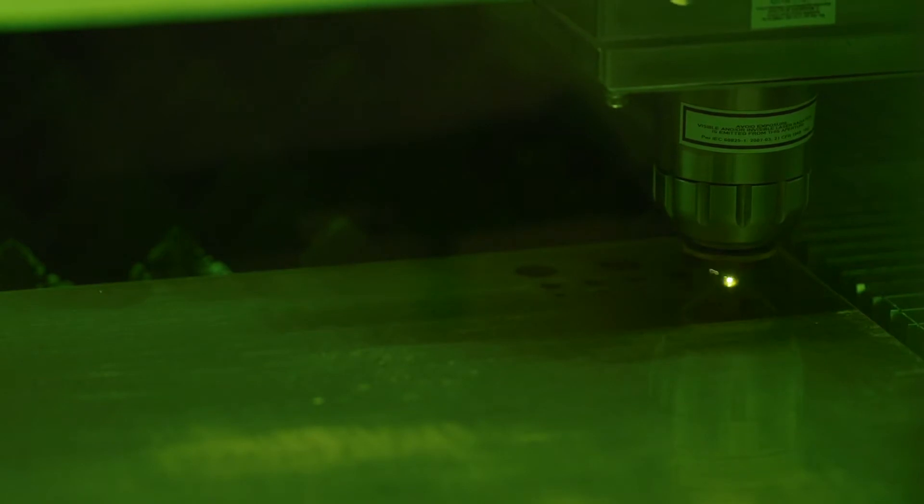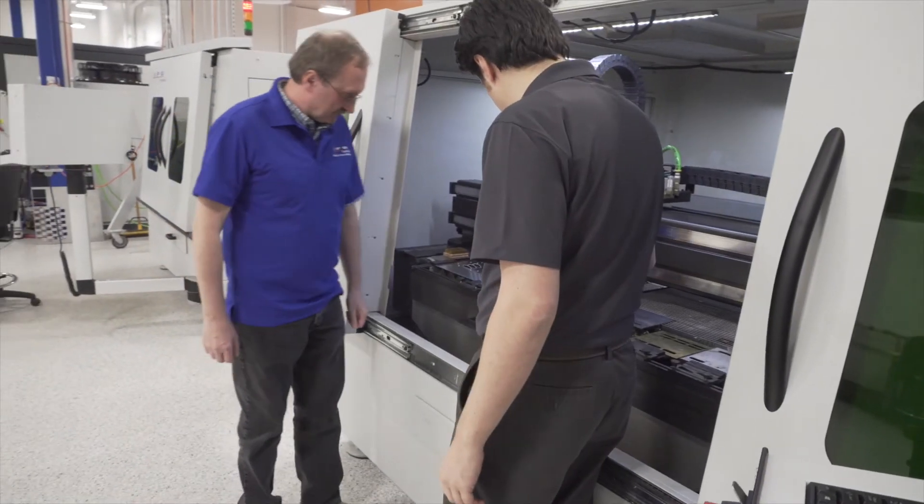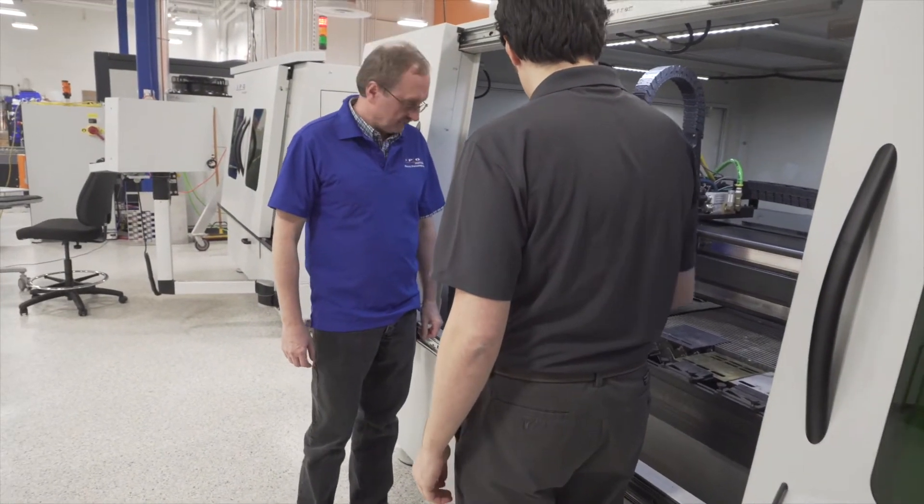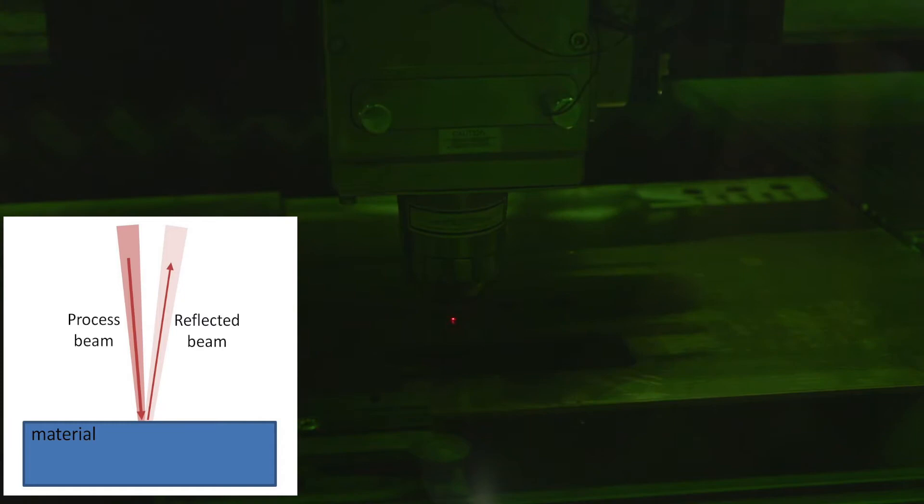So with the right choice of the laser, optical setup and process parameters, you can quickly melt the surface of these metals and prevent the excessive amount of laser light back-reflected and not being absorbed.